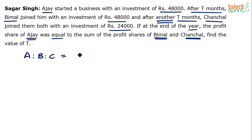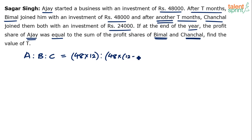Ajay's investment of 48,000 is in the business for 12 months — he started and was there till the end. Bimal invested 48,000 but only for 12 minus T months, since he joined T months late; his investment was available only for 12 minus T months. So the ratio so far is 48,000 × 12 to 48,000 × (12 − T).